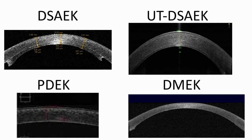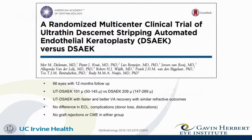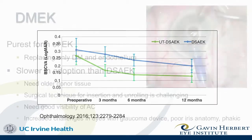The push towards thinner and thinner grafts — are we really making a difference in terms of visual acuity? Earlier studies did show, even in DSEK, that thinner tissue was associated with faster recovery and better quality of vision — more patients had 20/20 vision. Looking at a randomized multi-center clinical trial of ultra-thin DSEK versus DSEK, even though endothelial cell loss and complication rates were equal in both groups, the ultra-thin DSEKs had faster and better visual recovery overall.